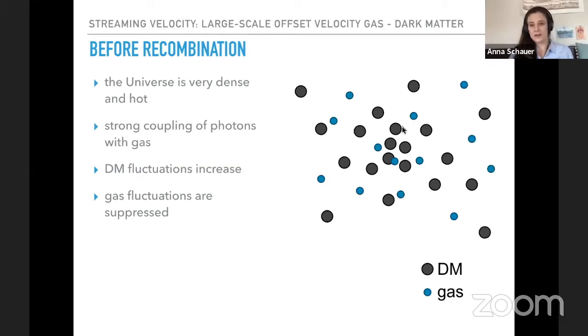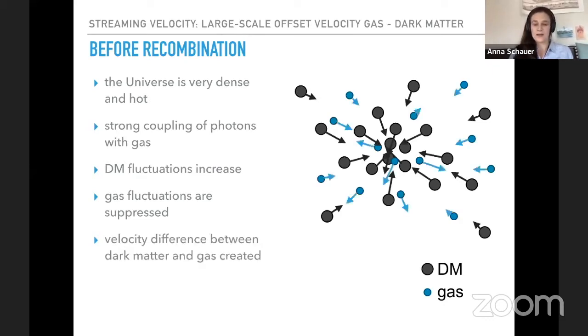We have dark matter in dark and we have gas in blue. And we can see that here in this region of the universe, a dark matter over density is growing. The gas doesn't follow that because when the dark matter can fall into its own potential well and increase, the gas, however, is pushed outwards from the pressure. So we do have a velocity offset in some regions of the universe between the gas and the dark matter before recombination.